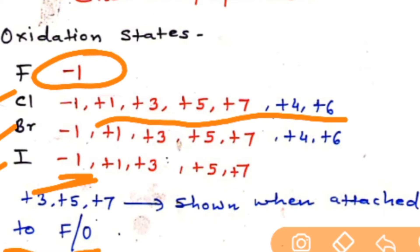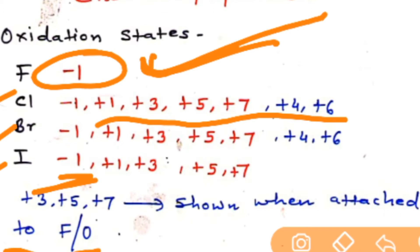Fluorine never shows positive oxidation states because of two reasons. First, it doesn't have d orbitals and therefore it cannot make more bonds. Second, it is the most electronegative element and hence it can never show a positive oxidation state.